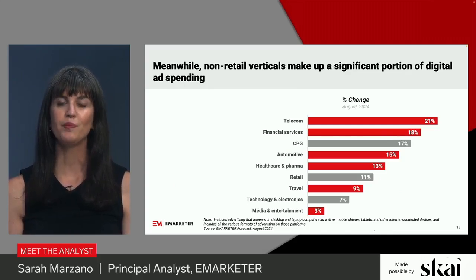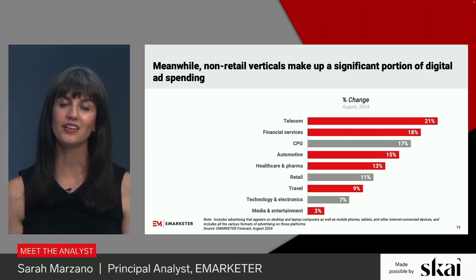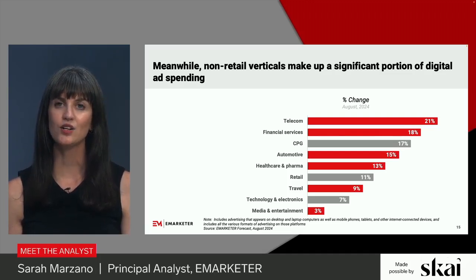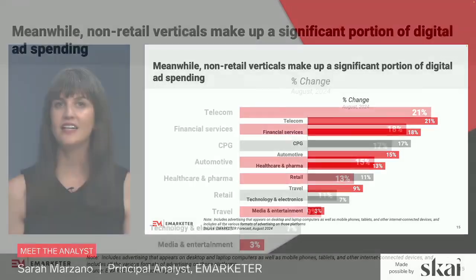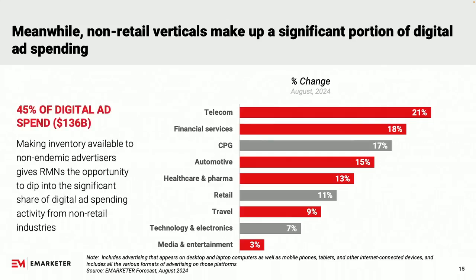There's strong reason to look beyond the traditional retail ecosystem for advertisers. eMarketer's digital advertising forecast shows industries outside retail — highlighted in red — represent nearly half of all digital ad spending: $136 billion in 2024 alone, with impressive year-on-year growth rates. Making ad inventory available to non-endemic advertisers gives retailers the opportunity to tap into this significant activity from non-retail industries.